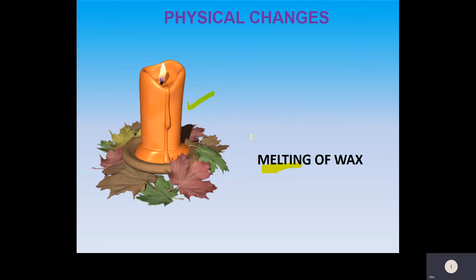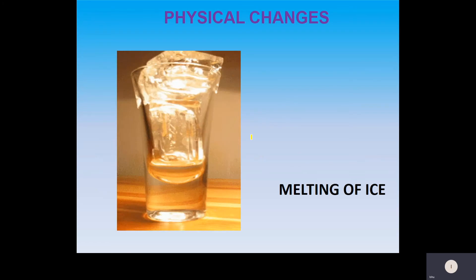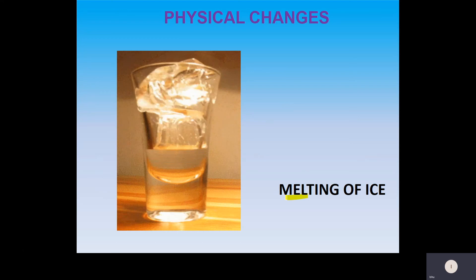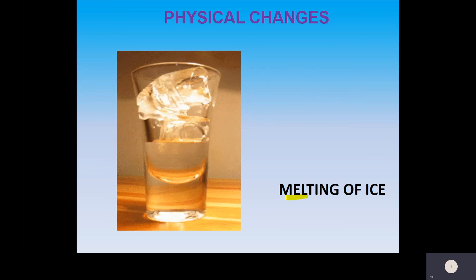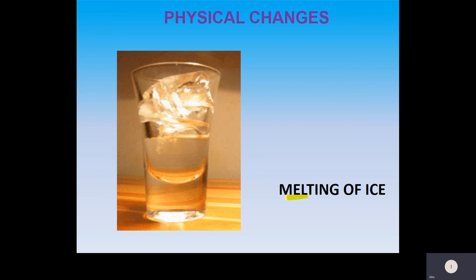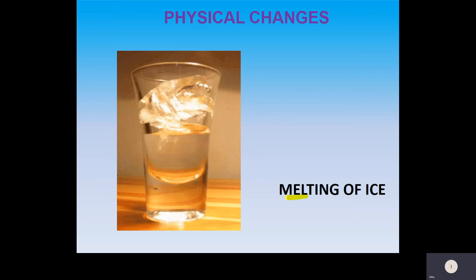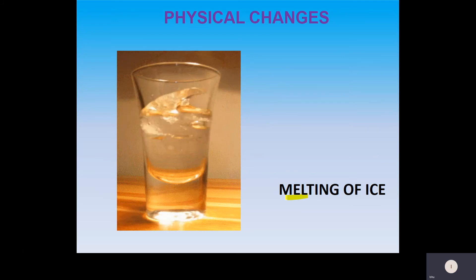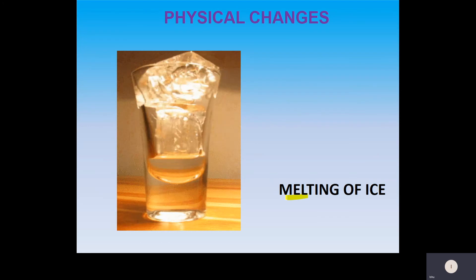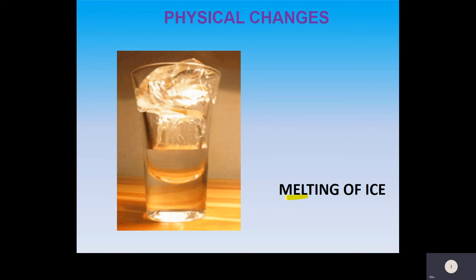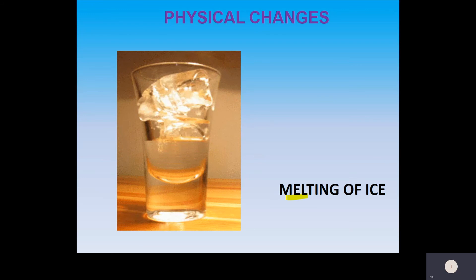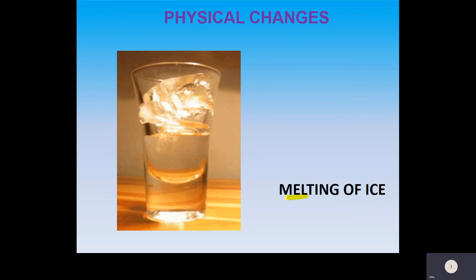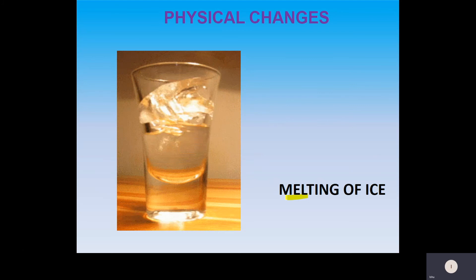Now we will take one more example to understand physical change: melting of ice. When ice melts, it converts into water. There is a change in the physical properties of the material — ice is the solid state, and when we heat it, it converts into water, which is the liquid state of matter. Again, there is a change in the physical properties, so this is also considered a physical change.